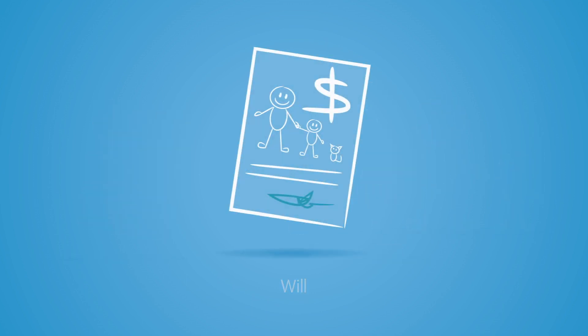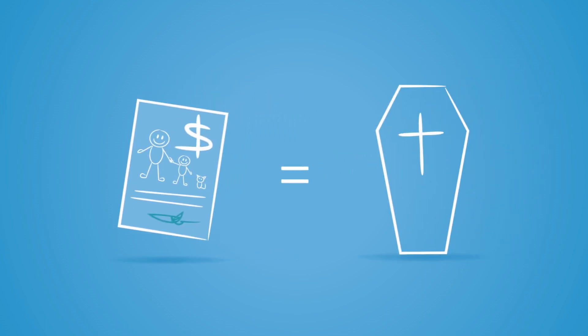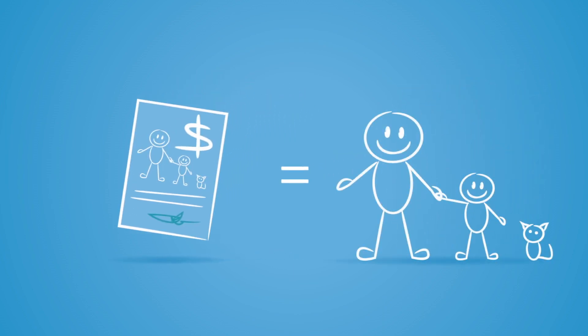Will. When you pass away your will explains who will look after your dependent children or pets. It also specifies how you would like your assets and property divided.